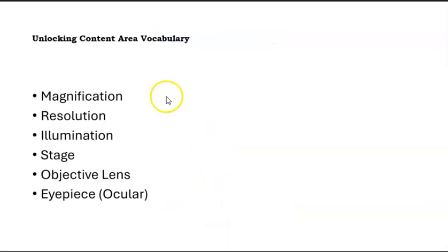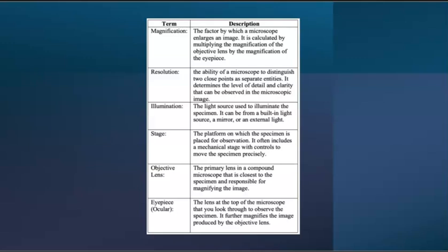Let's proceed to the unlocking content area vocabulary: magnification, resolution, illumination, stage, objective lens, and the eyepiece or ocular. For magnification, it's the factor by which a microscope enlarges an image. It is calculated by multiplying the magnification of the objective lens by the magnification of the eyepiece.